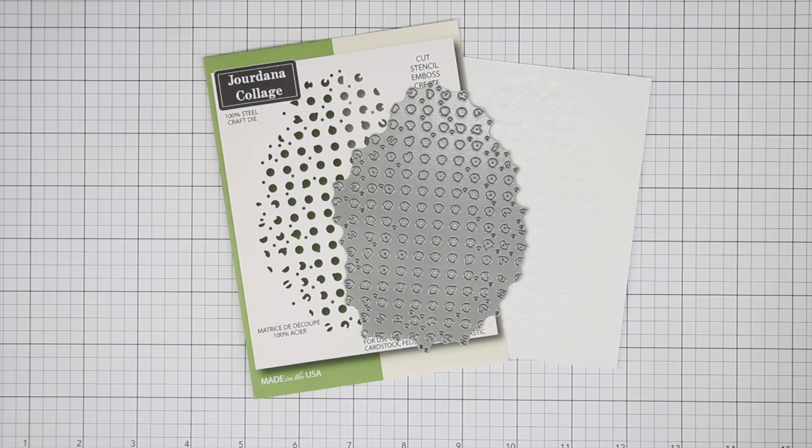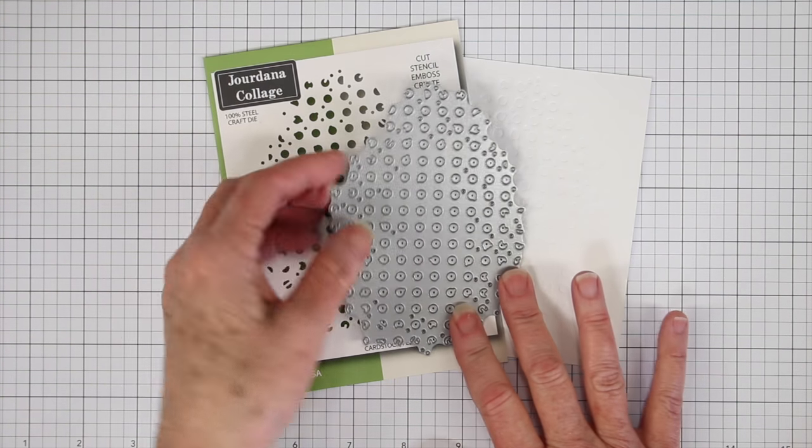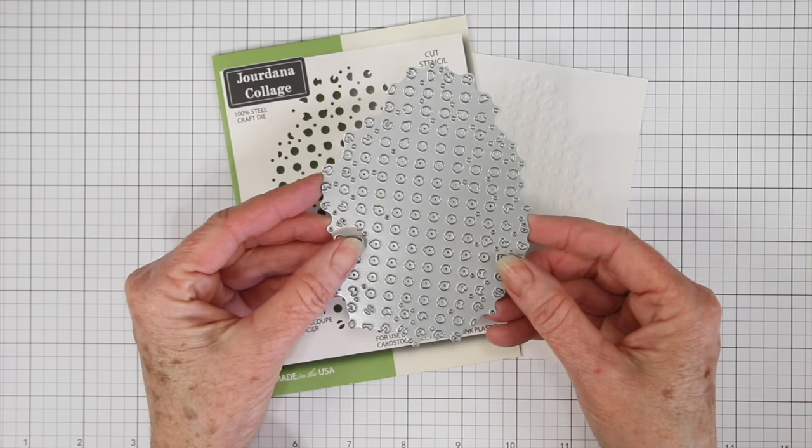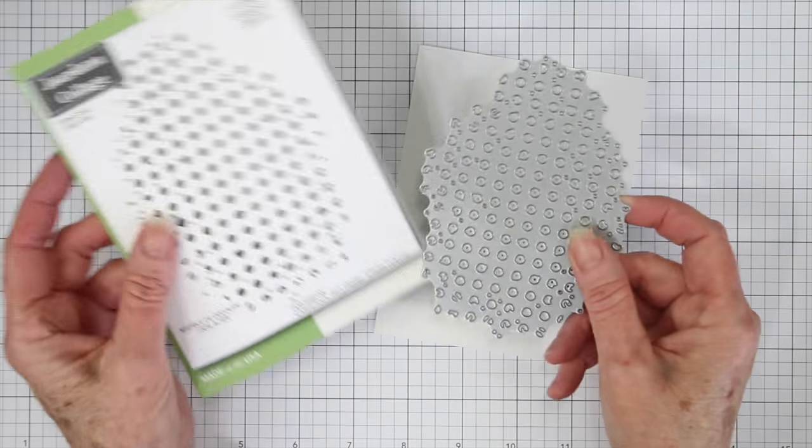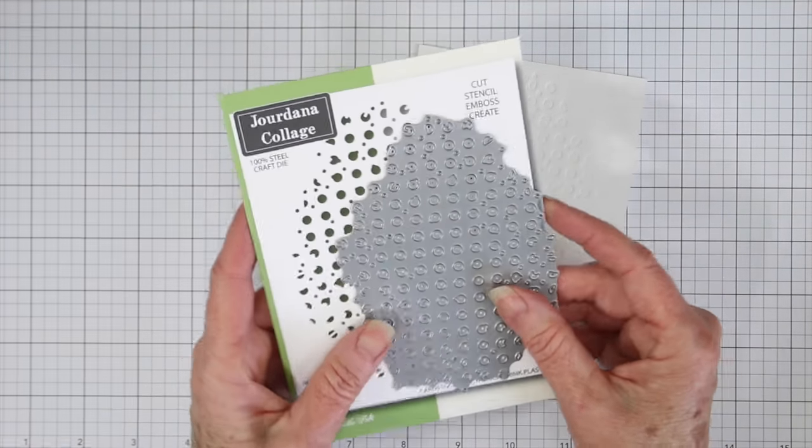The die I'm starting off with for my background is called the Giordana Collage, and it has a lot of little circles, kind of distressed looking edges, and here's the package. You can see the design a little clearer.